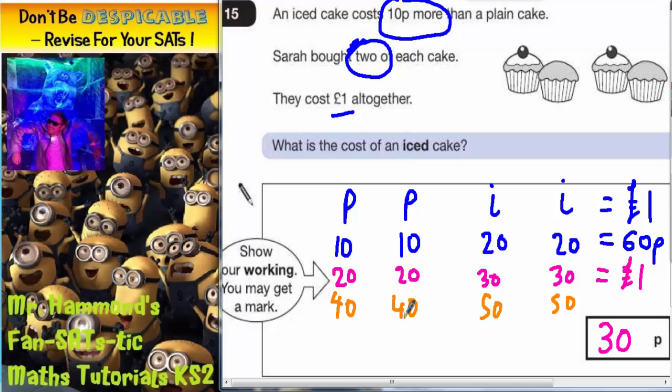40 and 40 is 80p, plus these two together make a pound. So that would have been £1.80. That would have been way too much.